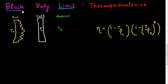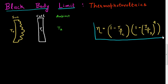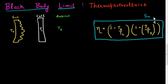In the last video, I derived this black body limit, which is given by this expression. While deriving this black body limit, I especially took into account the entropies associated with the absorption of solar radiation into the cell, and the entropy associated with emission of black body radiation from this cell.